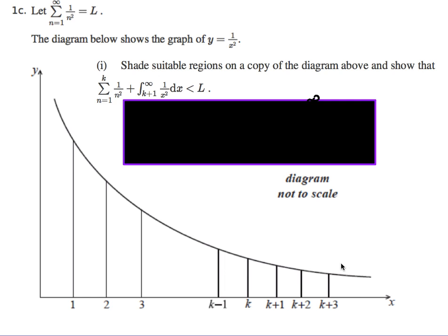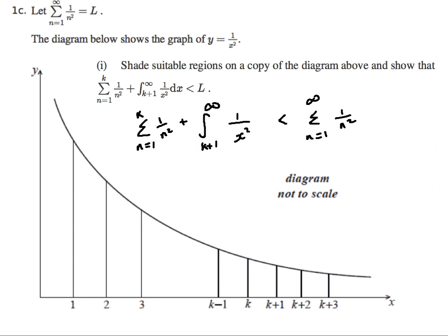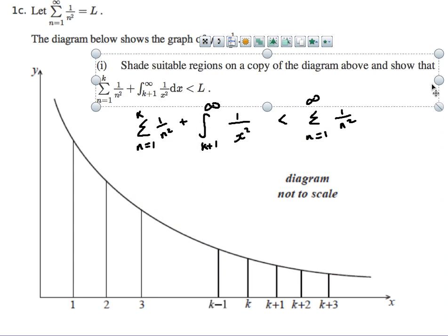The diagram below shows the graph of y equals 1 over x squared. We need to shade a suitable region to show that the sum from n equals 1 to k of 1 over n squared plus the integral from k plus 1 to infinity of 1 over x squared is less than L, where L is the sum from 1 to infinity of 1 over n squared. There's quite a lot going on, even though it's only worth three marks.